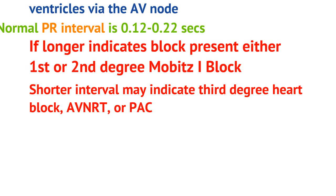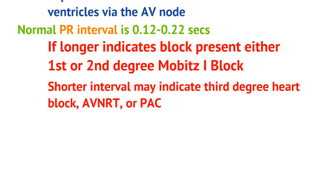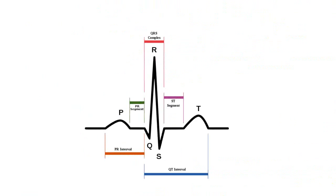Now, if the PR interval is shorter than normal, you want to consider other etiologies, such as: is there a dyssynchrony between atria and ventricle indicating a third degree heart block? Is this a premature atrial complex? Or is there some form of AVNRT occurring? You need to look at the rest of the EKG to figure out why someone has a shorter PR interval.